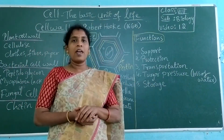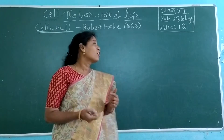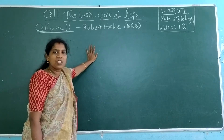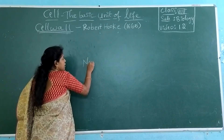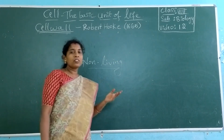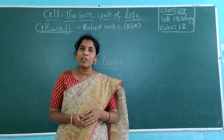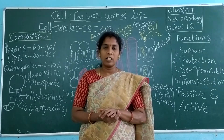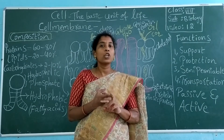The cell wall was first discovered in 1665. It is a non-living part, which is present on the outside of the cell. After the cell wall, the parts present inside — like the cell membrane, cytoplasm, and nucleus — are living. So now we will start discussing the living parts of a cell, beginning with the cell membrane.